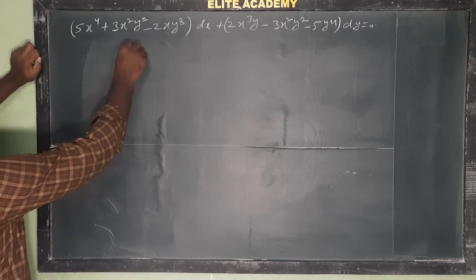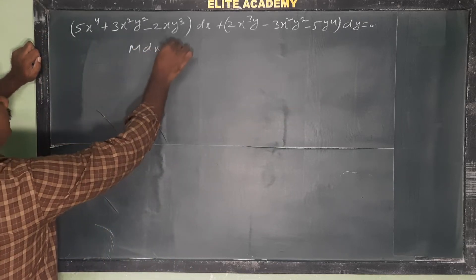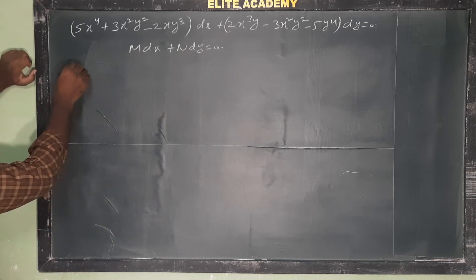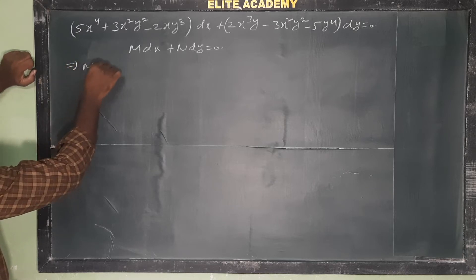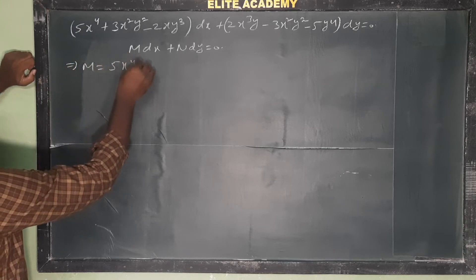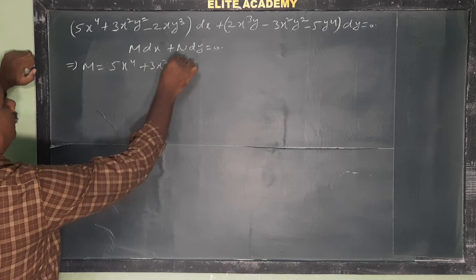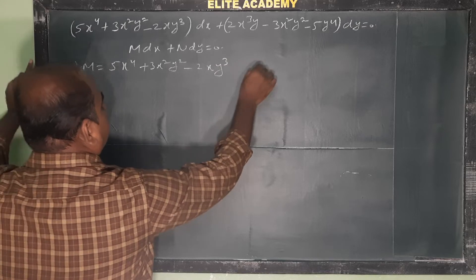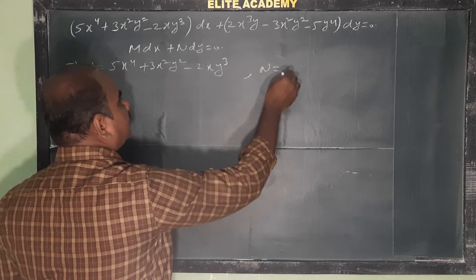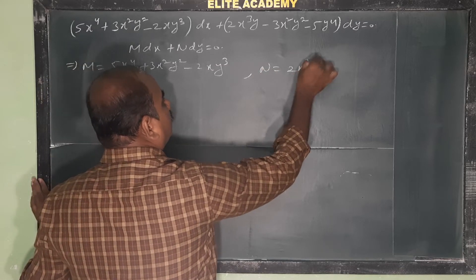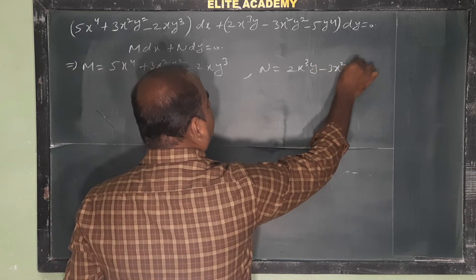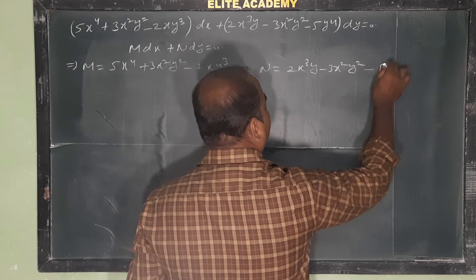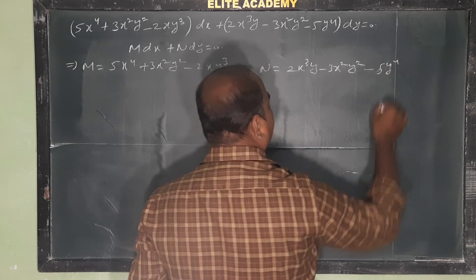Compare this with M dx + N dy = 0. That implies M = 5x⁴ + 3x²y² − 2xy³, whereas N = 2x³y − 3x²y² − 5y⁴.